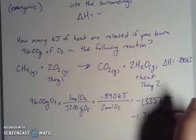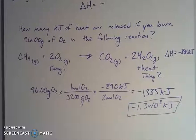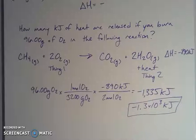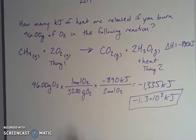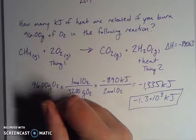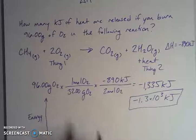Rounding to two significant figures — if we're uncertain about that zero in the delta H — this would be 1.3 × 10³ kilojoules. This is the amount of energy released. I can tell it's being released because of the negative sign. Recall that energy can never actually be negative — that doesn't physically make sense — but this sign convention shows that energy is being released from the system out into the surroundings.